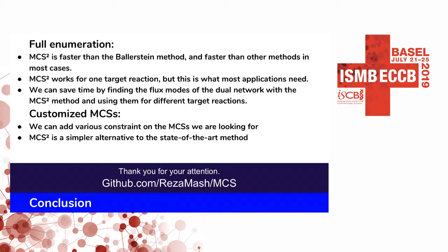To summarize, our method is faster than the polarization method for full enumeration, which is itself faster than other methods in most cases. Our method works for only one target reaction, but this is what we want in most applications of minimal cut sets. For customized minimal cut sets, we can add advanced constraints, and our method is a simpler alternative to the state-of-the-art method. Thank you for your attention. Please visit our GitHub for the full results and implementations.